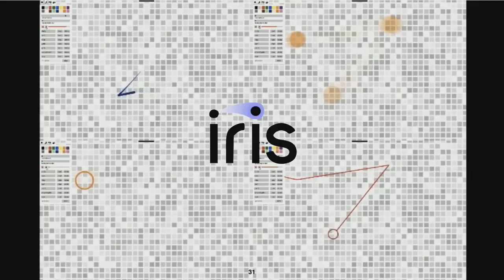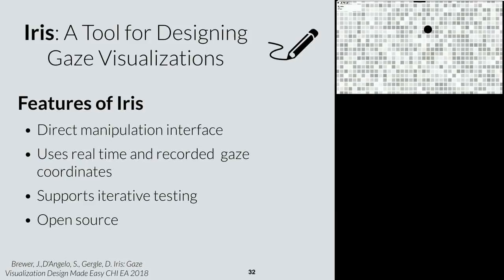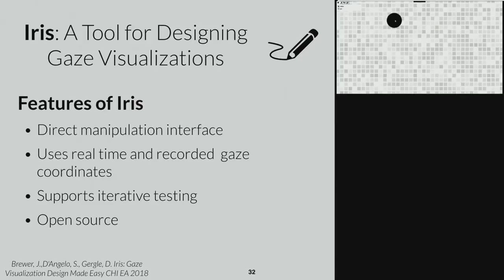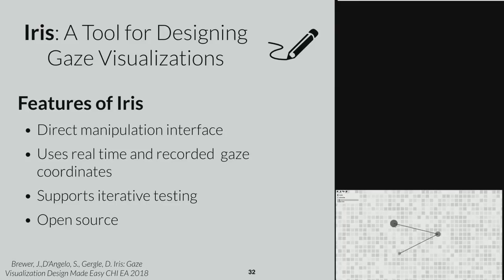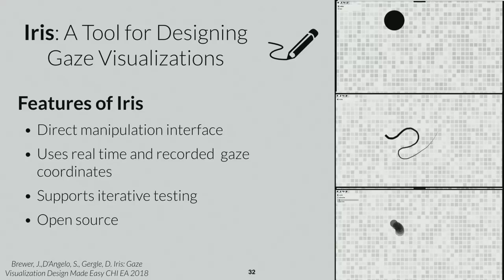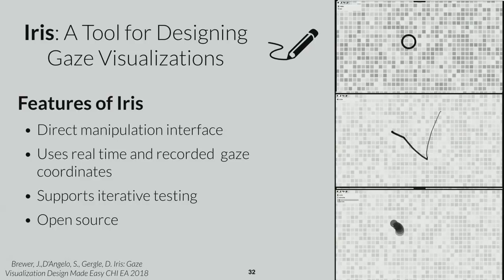IRIS is the platform we've developed — a direct manipulation interface. You interact with your fixation point by dragging on it, adjusting the fill and testing it with your gaze coordinates in real time. You can drag out the tail to show different previous fixations, where the length depends on how much previous fixation duration you want to show. You can change the representation to show dots connected by lines and adjust the size and fill of each point. With all these different elements, you can imagine many ways to create gaze visualizations. We've made this open source for researchers to investigate different visualization forms and also support iterative testing — you can record gaze information and play it back in different techniques.